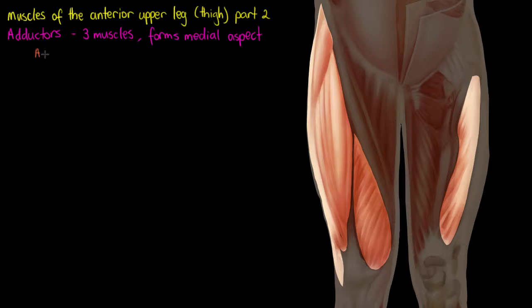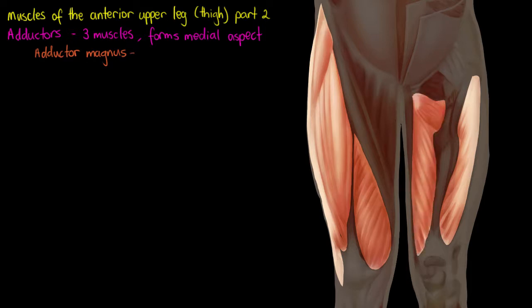Let's get started with the first one: the adductor magnus. I'm going to highlight it right now, and we can see it's quite a large muscle — it's going to be the largest of our adductor muscles. It has quite a broad insertion, inserting all the way along the linea aspera, which is part of our femur bone. If you need to go back to the femur video to review that structure, do that as well.